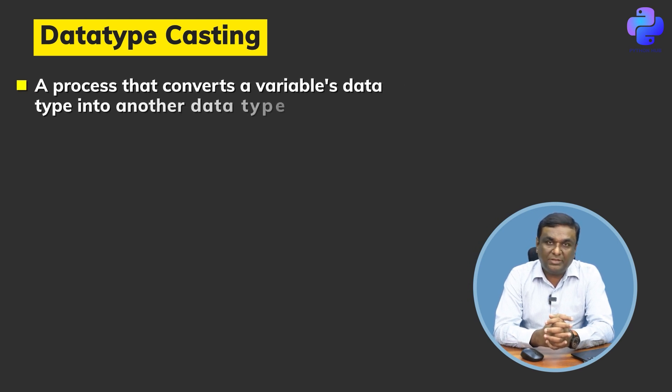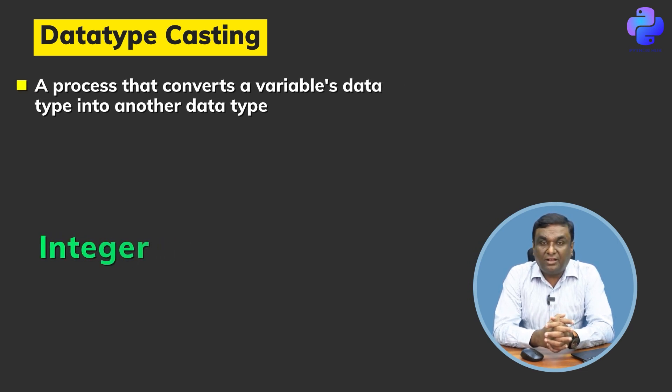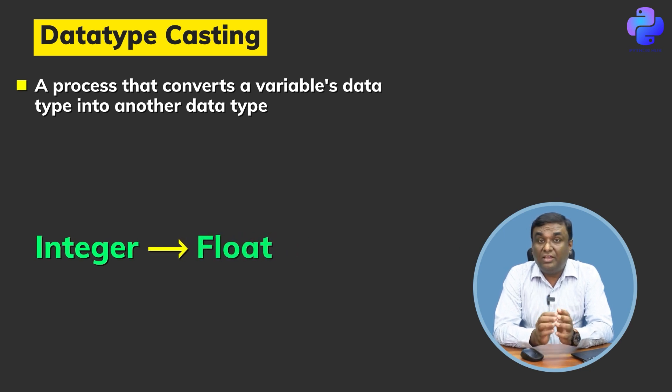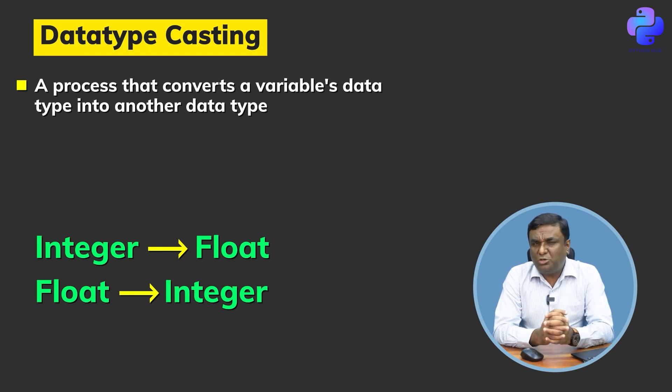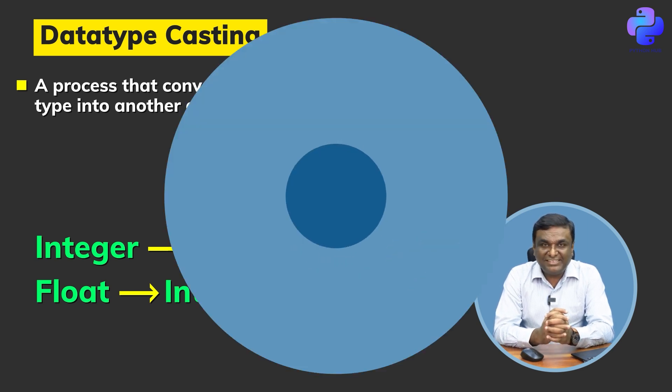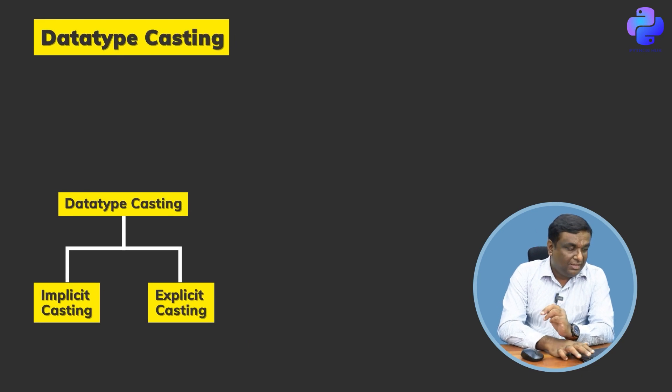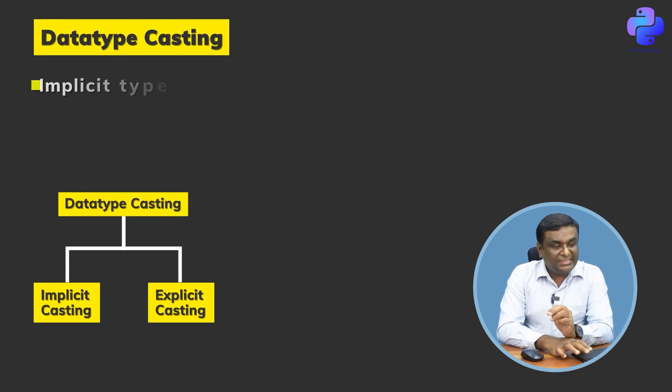If it's an integer, can I convert it to float? If it's a float, can I convert it to integer? Like this I can change different data types depending on my business needs. So there are two types of casting. Let's understand that.